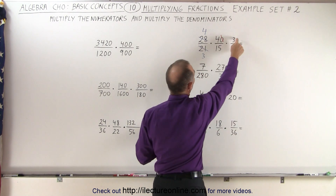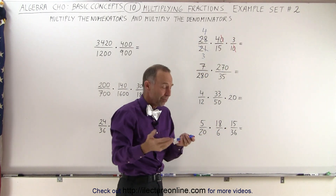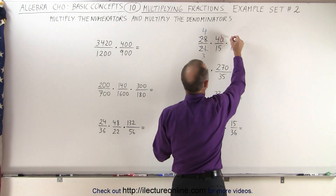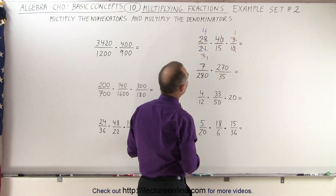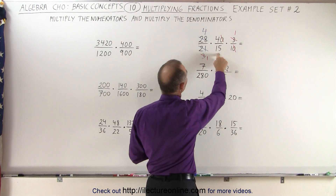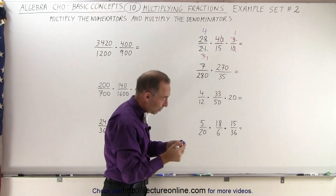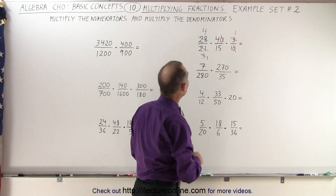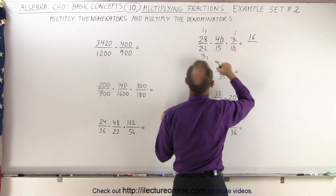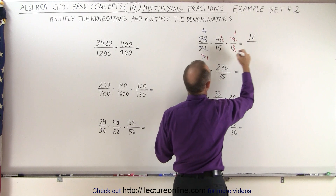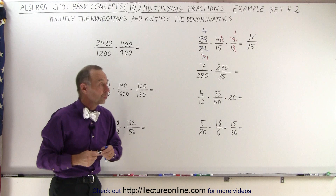Notice we have a 3 and a 15 here, but we also have a 3 here and a 3 there. So right away we can make that a little bit easier. Divide this 3 by 3, we get a 1. Divide this 3 by 3, we get a 1 there. And now we have a 1, a 15, a 1, a 4, and a 4 — I don't think we can simplify anymore. We can now simply multiply all the remaining numerators: 4 times 4 is 16, divided by 1 times 15 times 1, which is 15. That's our final answer — the most reduced answer we can get.